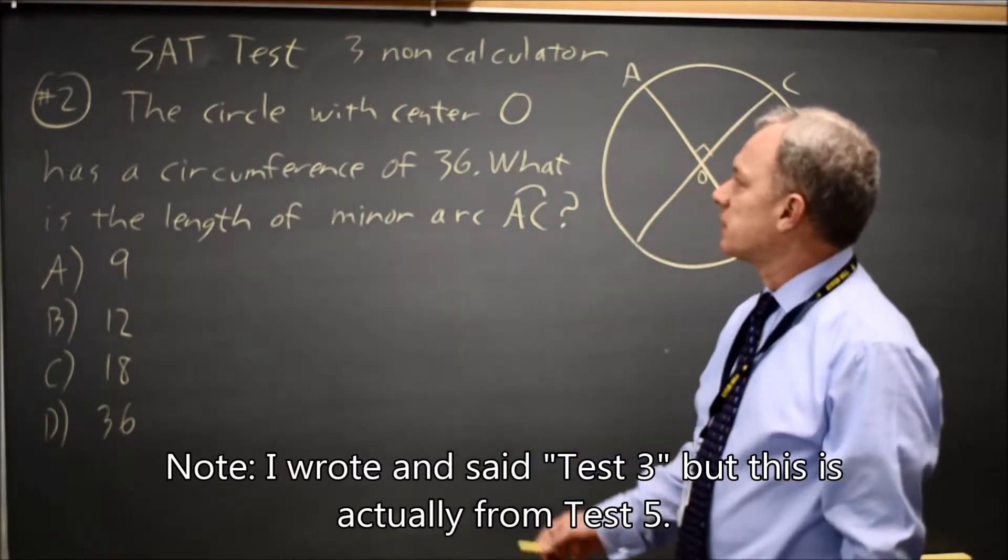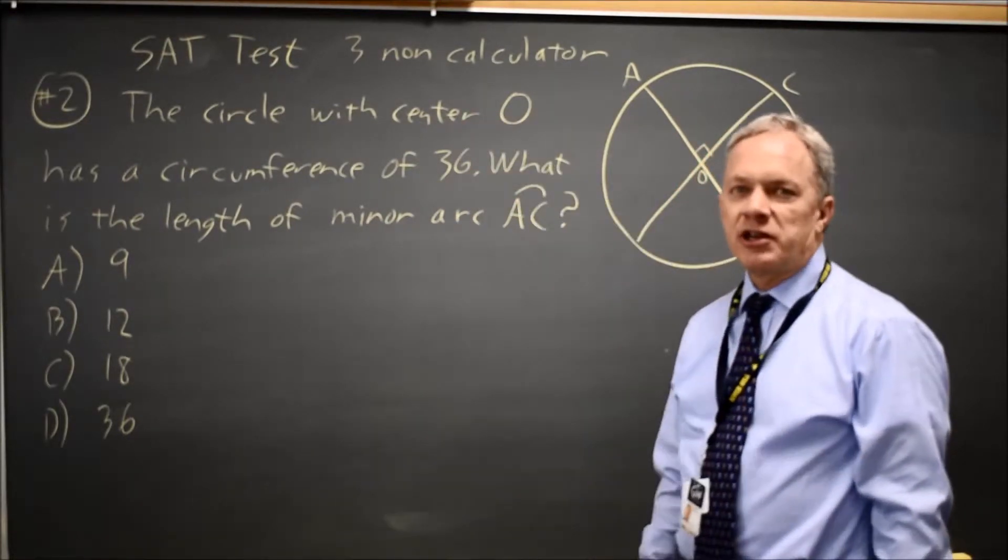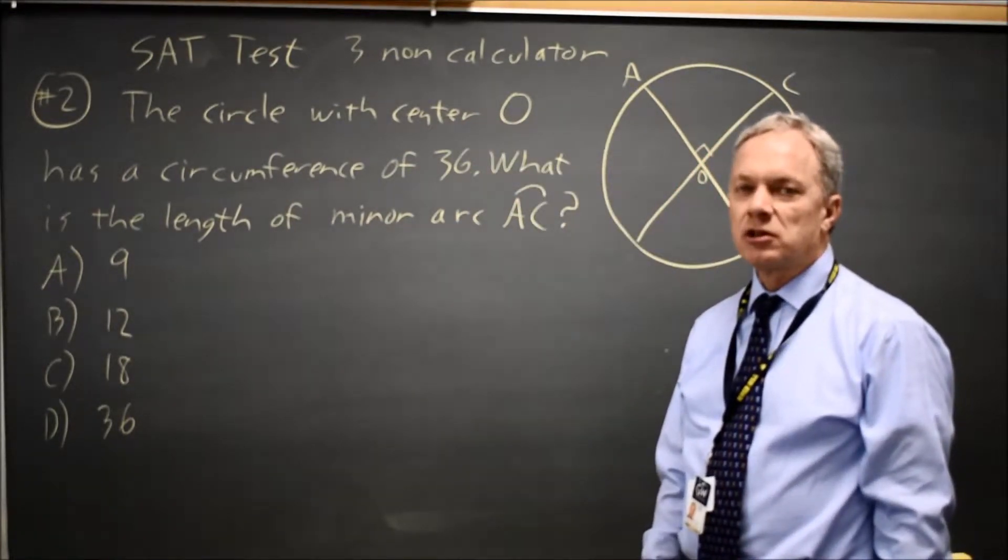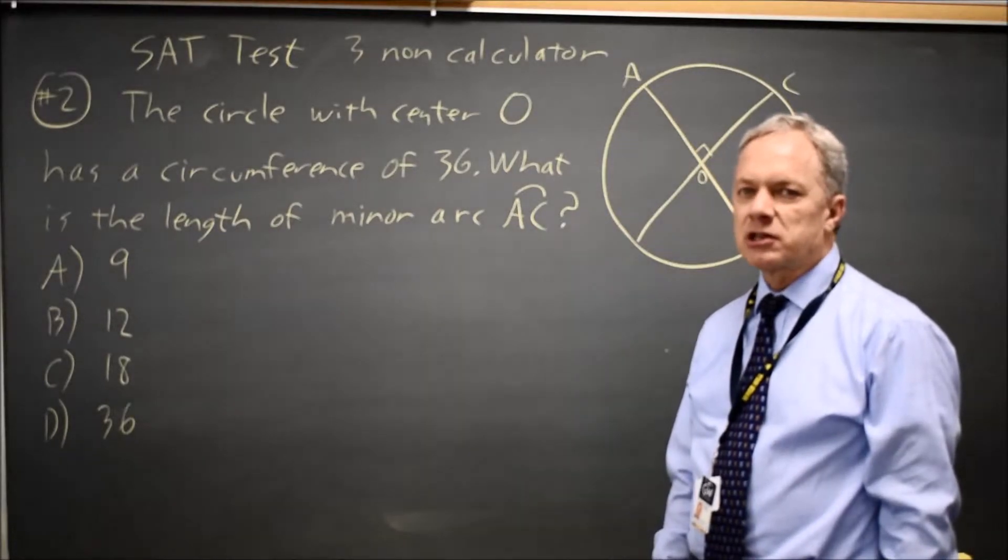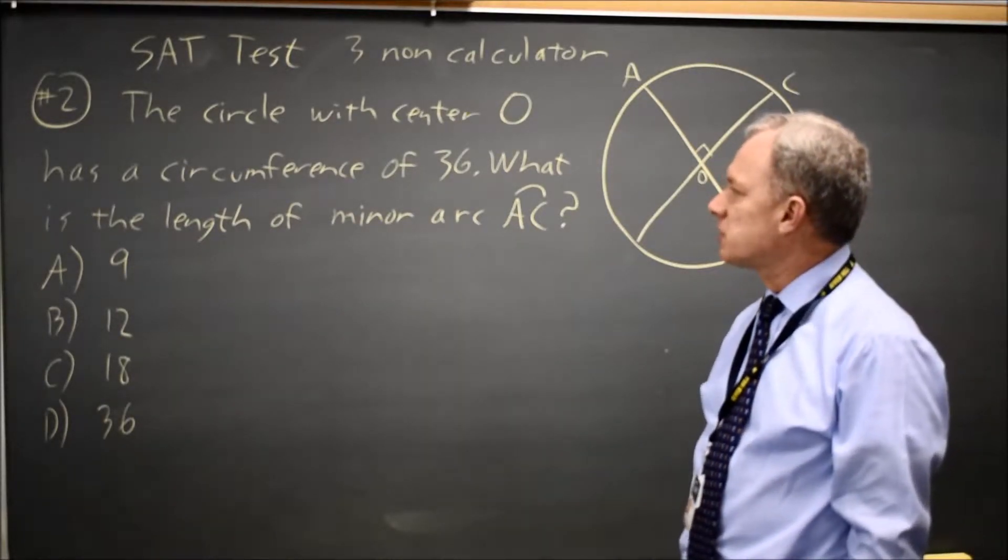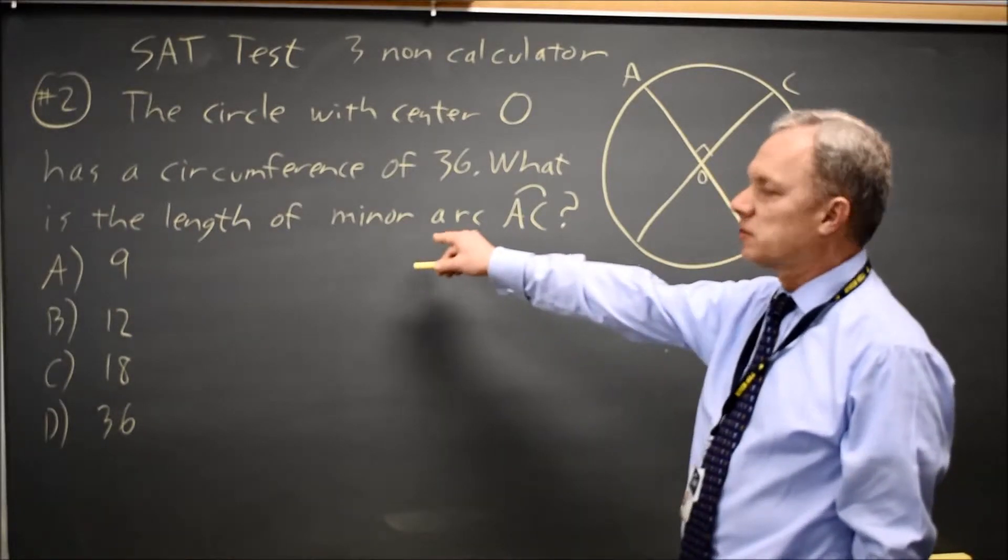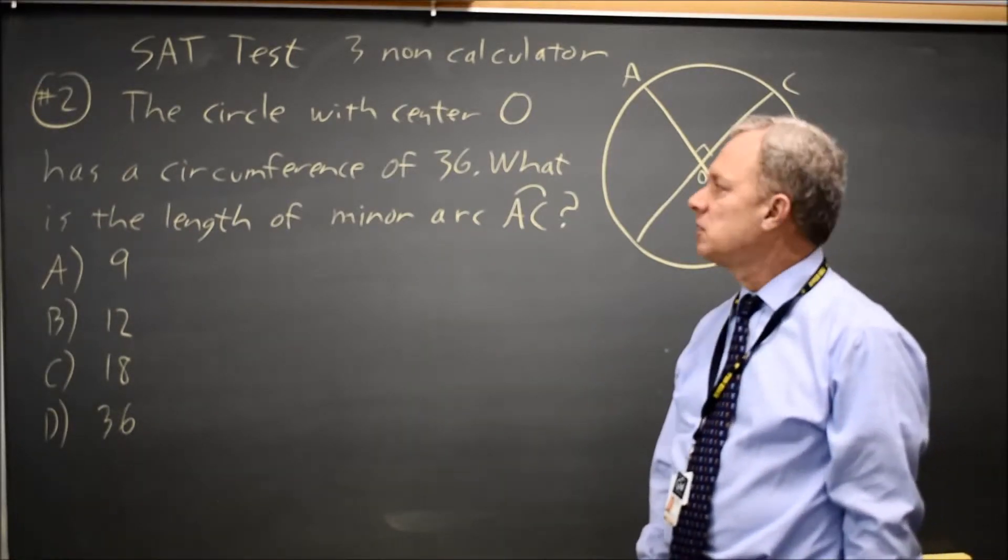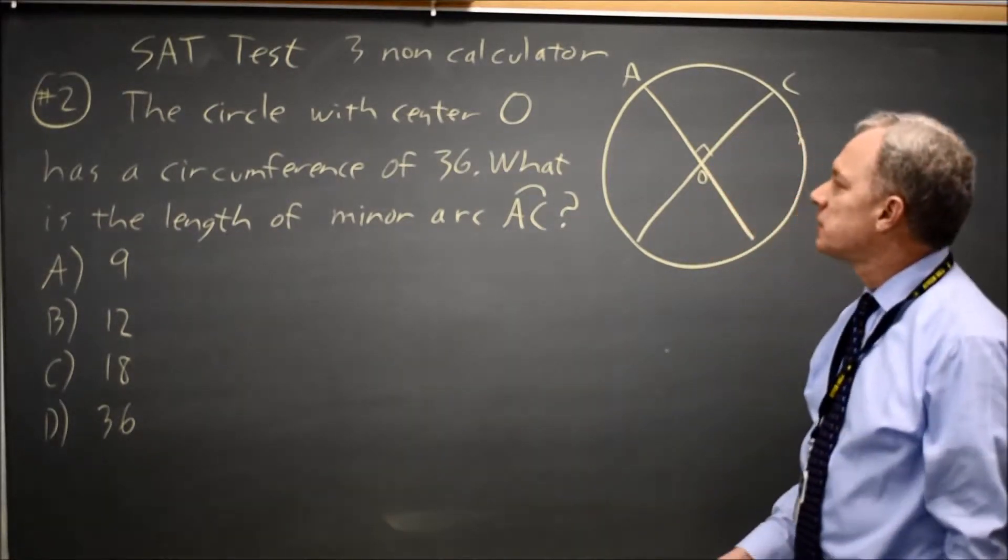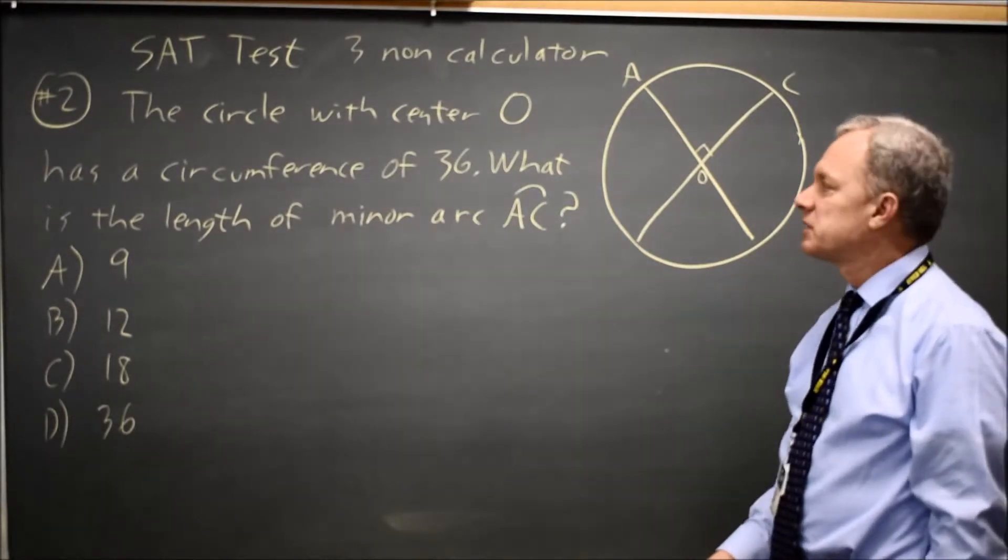College Board is asking about a circle. They'll often ask for either the equation of a circle or something to do with the area or some arc along the circumference. In this case, they're asking about the length of a minor arc, which is an arc less than half the circle, along the circumference when the entire circumference is 36.